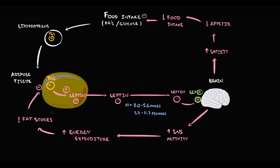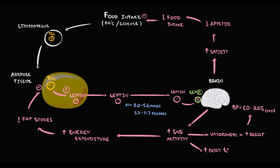Also, increase in sympathetic nervous system activity causes a mild increase in body temperature and mild vasoconstriction. With vasoconstriction, resistance of the blood vessels increases. And recall that blood pressure is equal to cardiac output times systemic vascular resistance. So with increase in resistance, blood pressure increases.